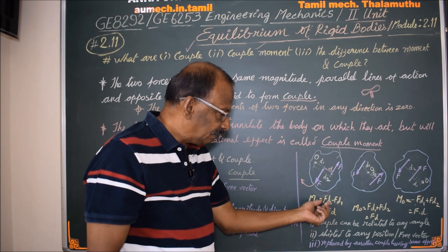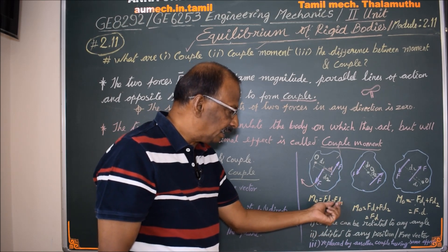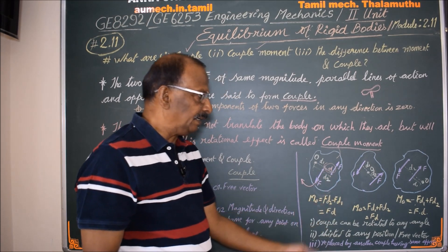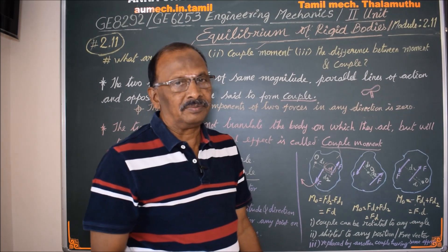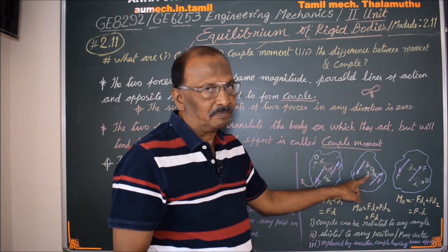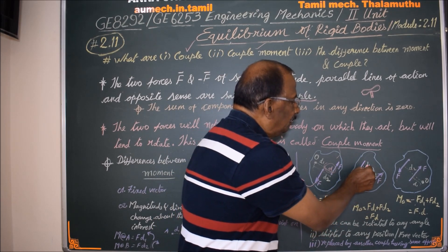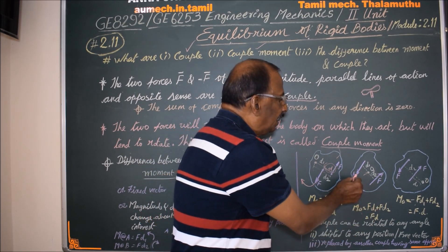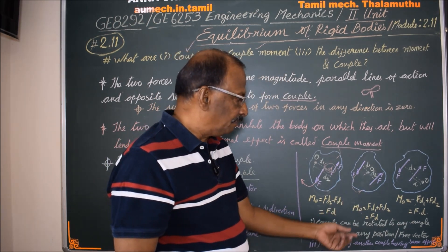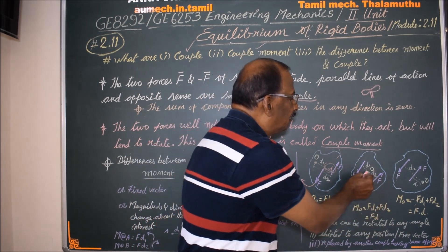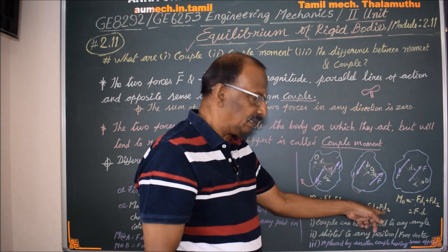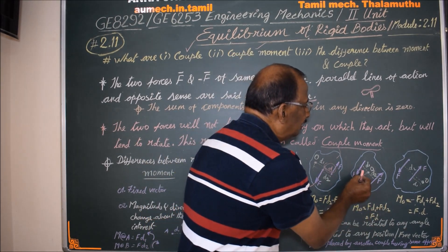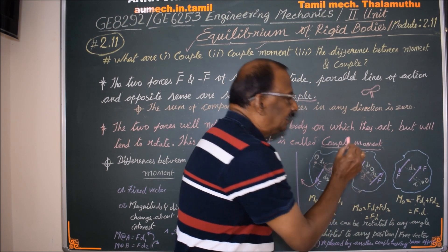The moment is F into D, where D2 minus D1 is D — the distance between the two forces. About any reference point, F into D1 gives an anticlockwise moment, and F into D2 gives another moment. Taking the common factor F, we get F into (D2 minus D1), which equals F into D — the distance between the two forces.